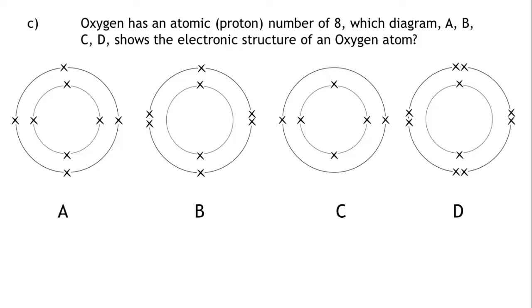Let's write down what we know. The atomic number tells us how many protons are in an atom. The number of protons is equal to the number of electrons. This means we should see eight electrons in the correct diagram.